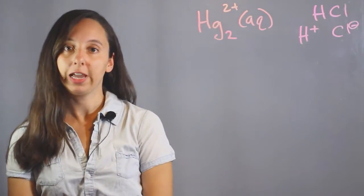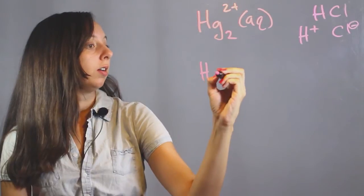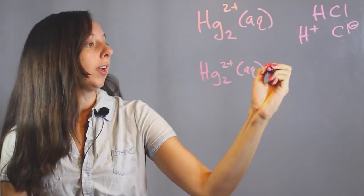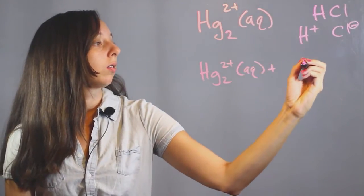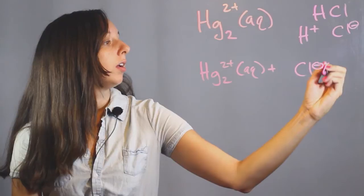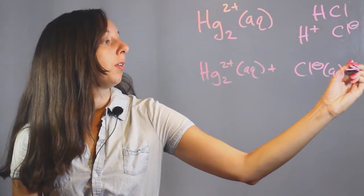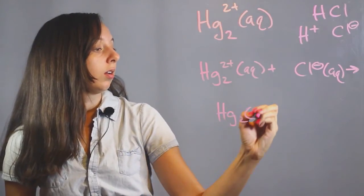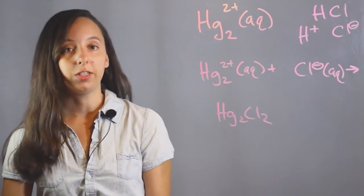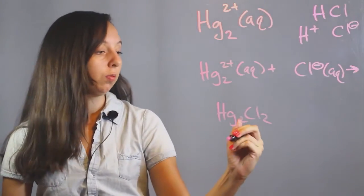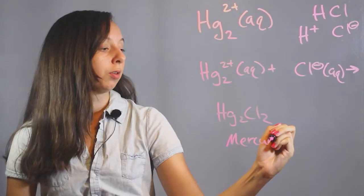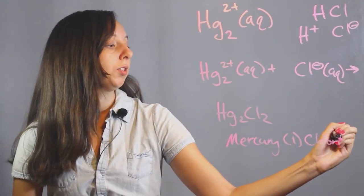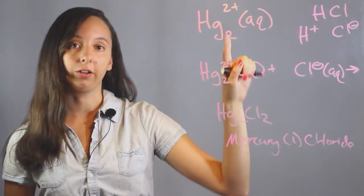So let's put them together. If we have our mercury 2 plus, got our aqueous, and we add our chloride ion, this is also aqueous, then what that creates is this new compound, Hg2Cl2, and the name of this is mercury 1 chloride. Mercury 1 refers to the fact that we started with this ion of mercury and not another one.